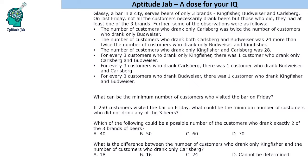Hello everyone, welcome to Aptitude Jab. This problem says that Classy is a bar in a city and it serves beers of three brands: Kingfisher, Budweiser, and Karlsberg. On a particular day, some customers came to the bar and not all of them drank beers, but those who drank beers had at least one of these three brands. Some information is given in the form of statements, and since there are three brands and we see statements about combinations, we can make out it's a Venn diagram question.